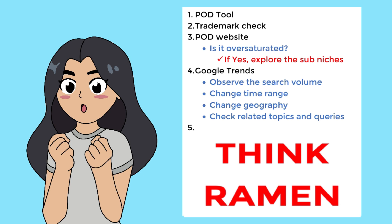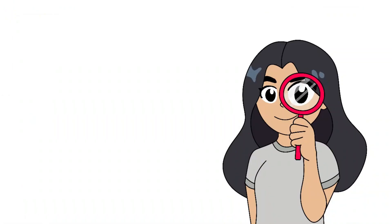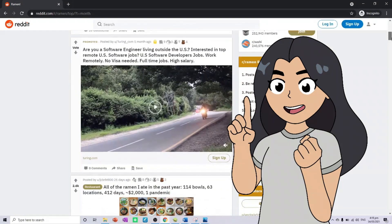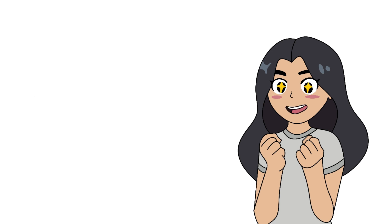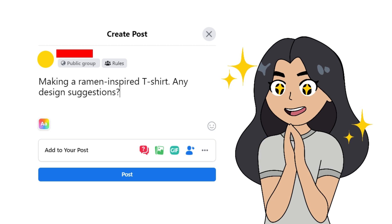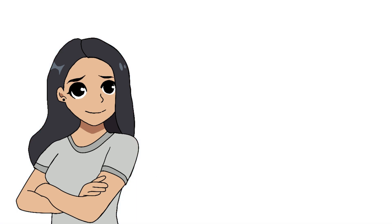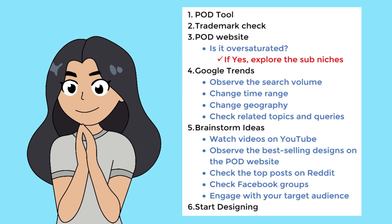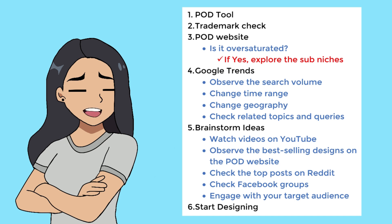Now that I have a basis for what to design, it's time to brainstorm ideas. Watch YouTube videos and note top comments from ramen lovers. Check top designs on Redbubble for inspiration, or check top posts on Reddit. You can check Facebook groups to see what types of designs get the most reactions from ramen lovers. Or even better, personally ask your target audience what would make them buy a ramen-related t-shirt. The last step is to start designing — let your imagination and creativity take over. I believe it's not the level of expertise but the level of thought you put into your design that matters.